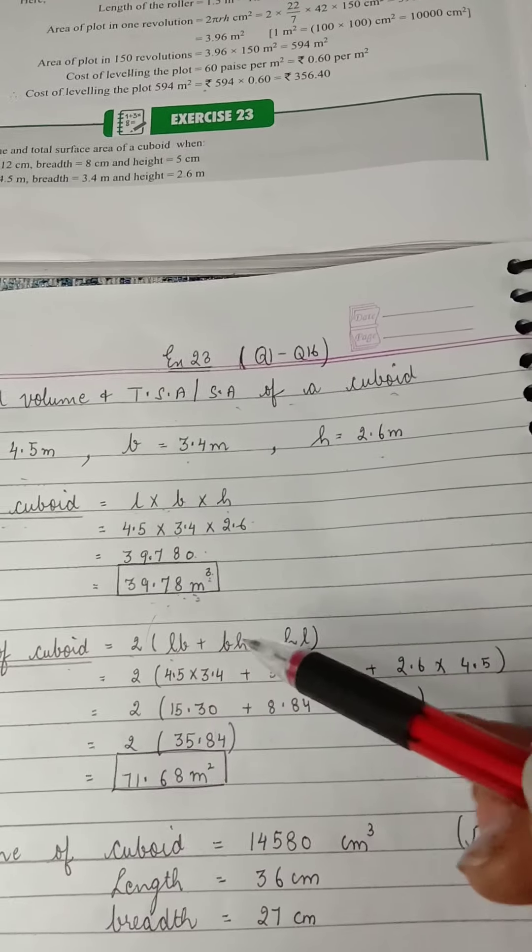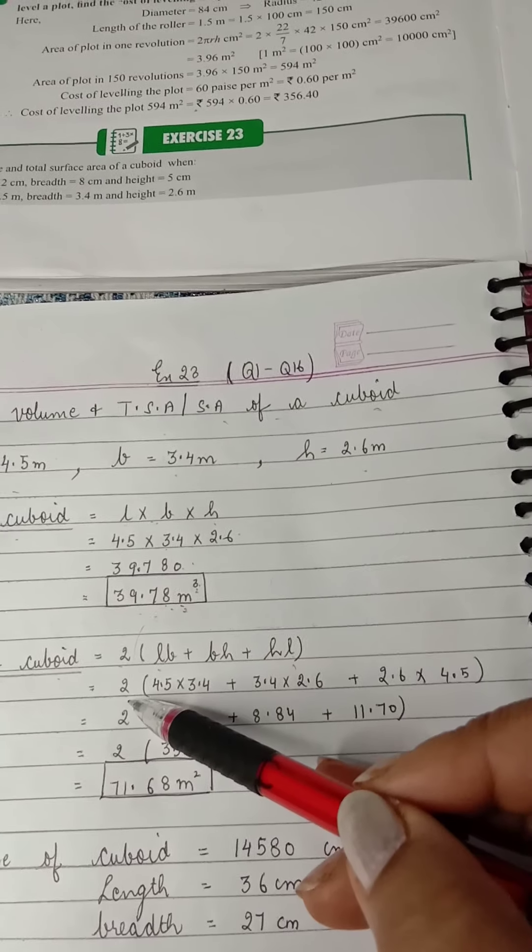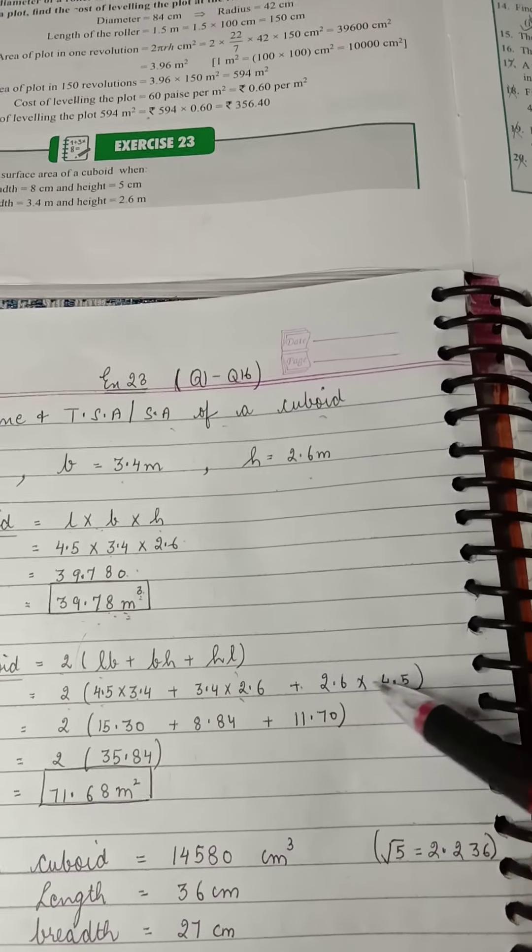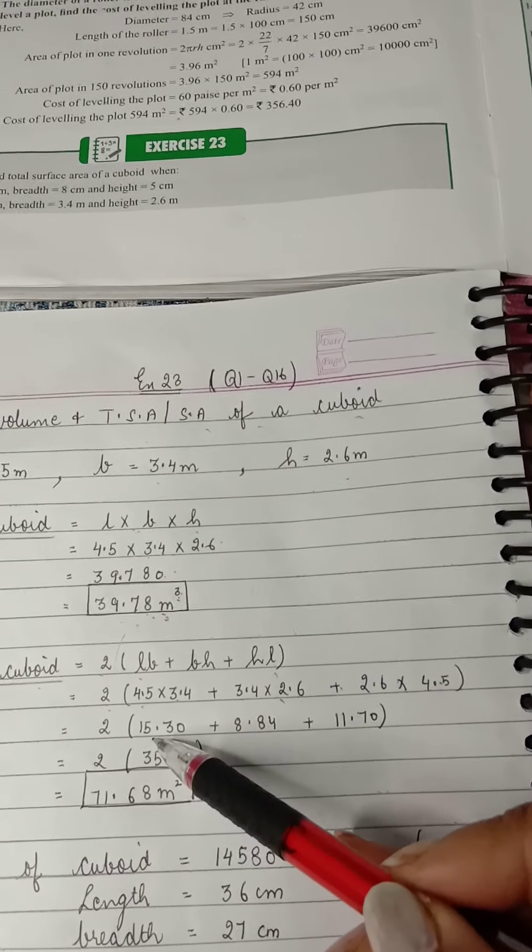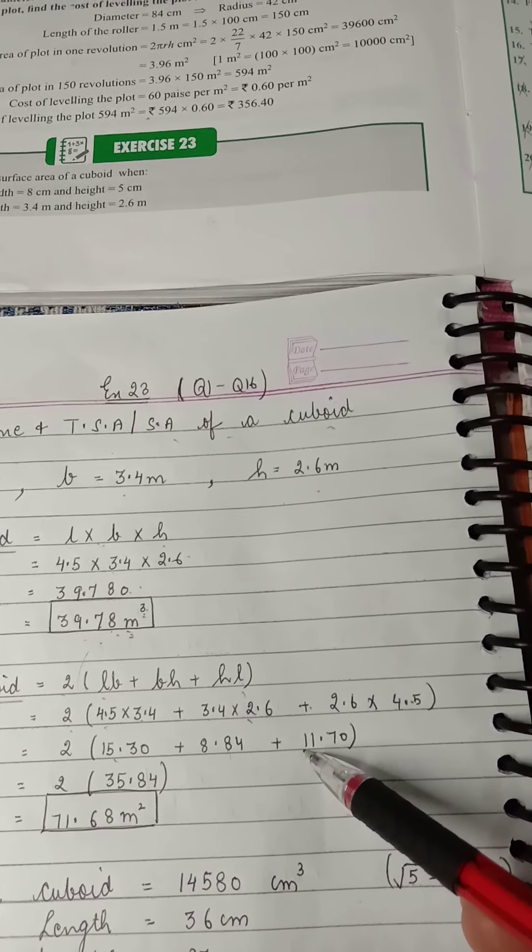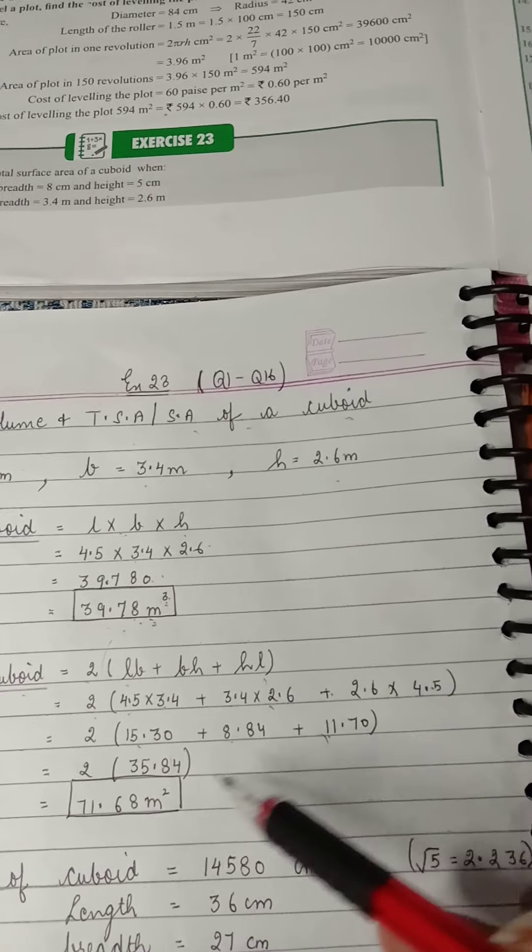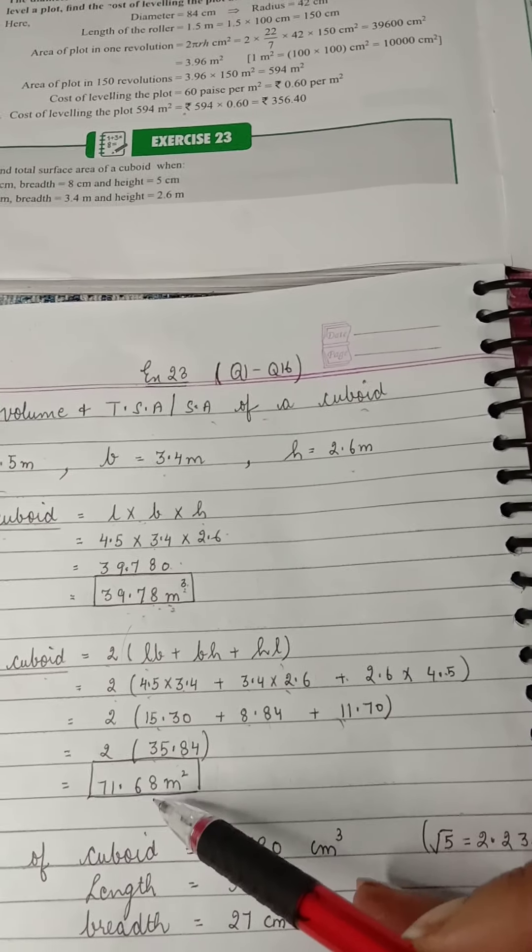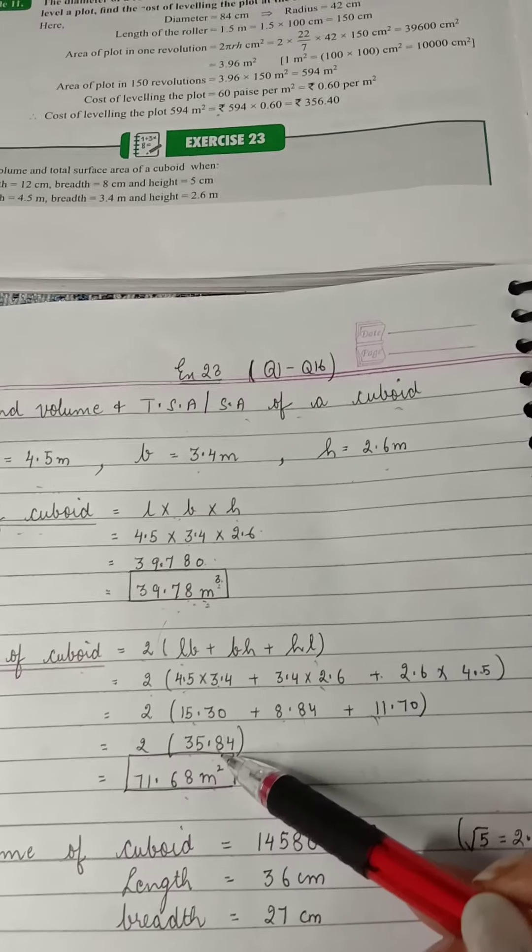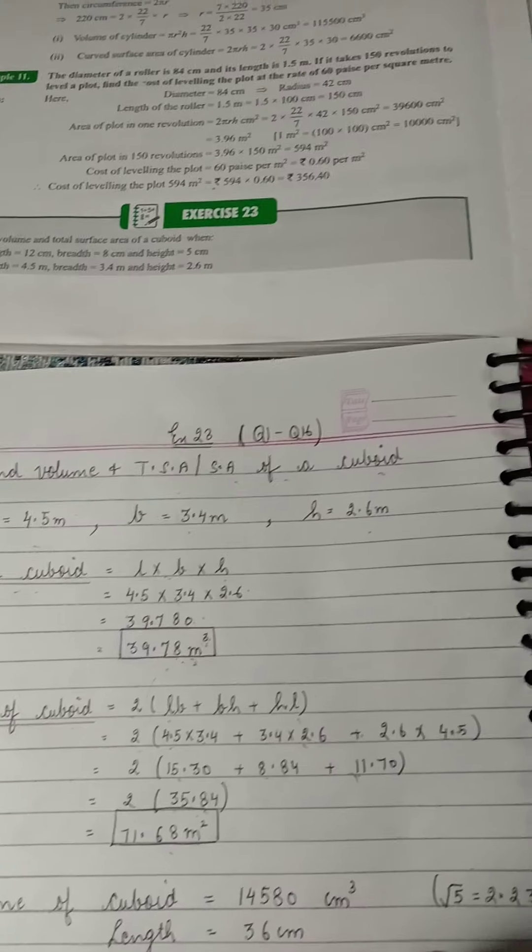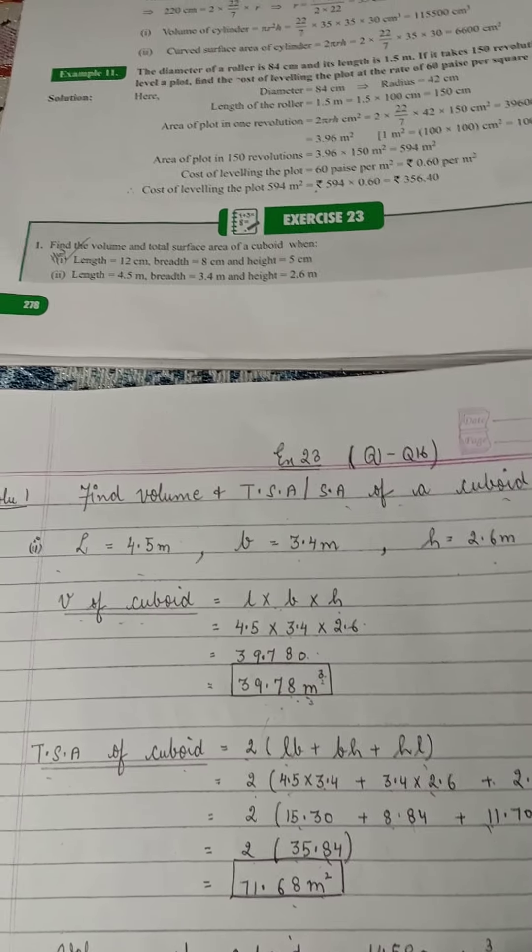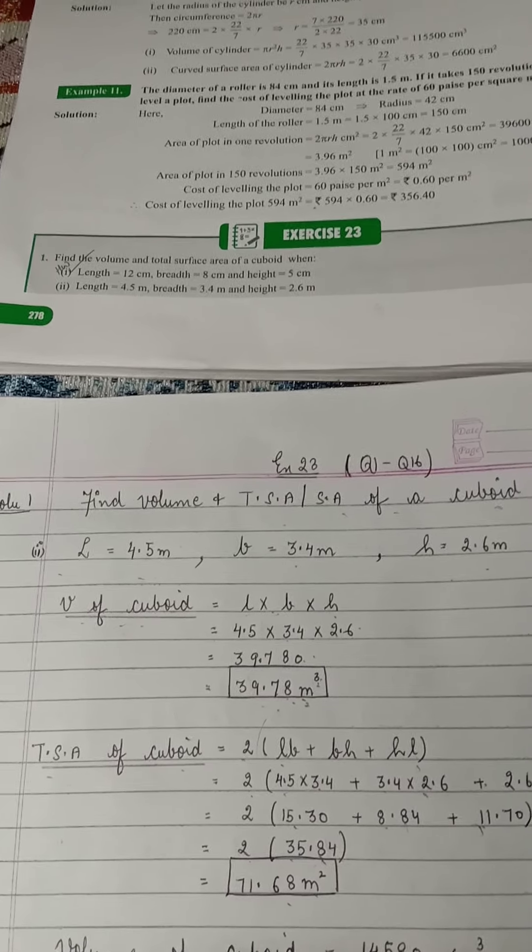Next coming to TSA, or you can write SA of a cuboid: 2LB, that's length, breadth, breadth, height, and height, length. So 2, length into breadth, breadth into height, height into length. Now this comes as 15.30, 8.84, 11.70, and on adding all this we get 35.84. 2 multiplied by 35.84 is 71.68 meter square. Question 2, I'm giving you for homework. Please try out the second question yourself, and in case there's any confusion in the question we'll discuss it in the doubt class.